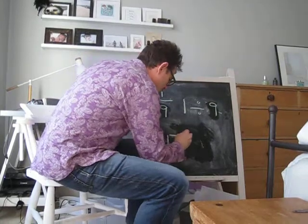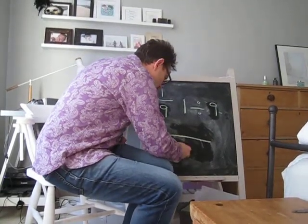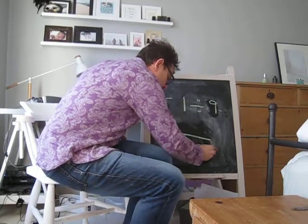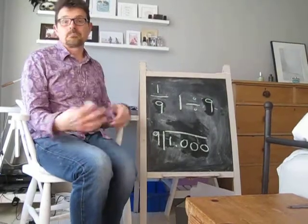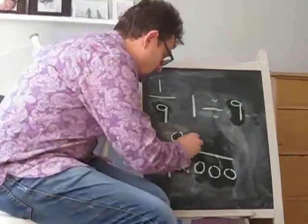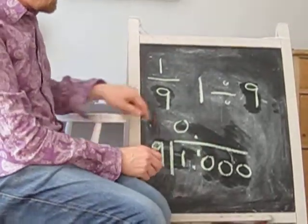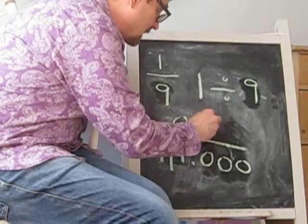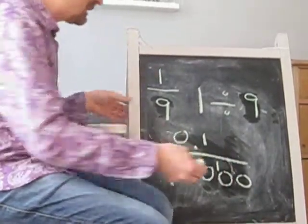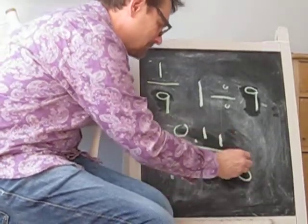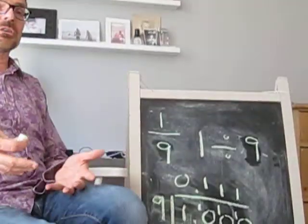So one divided by nine. Again, how many nines are in one? Zero, of course. Bring the remainder, which is one there. How many nines in ten? One, remainder one. How many nines are in this ten? One, remainder one. How many nines are in ten? One, remainder one. And actually you can carry on doing that.